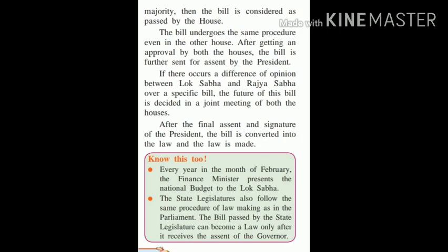Every year in the month of February, the Finance Minister presents the national budget to Lok Sabha. The state legislature also follows the same procedure of law-making as in Parliament. A bill passed by the state legislature can become a law only after it receives the assent — the agreement and signature — of the Governor. This is the end of the lesson.